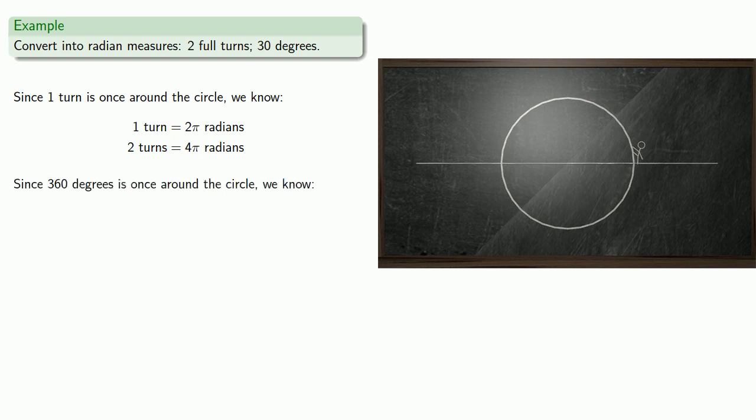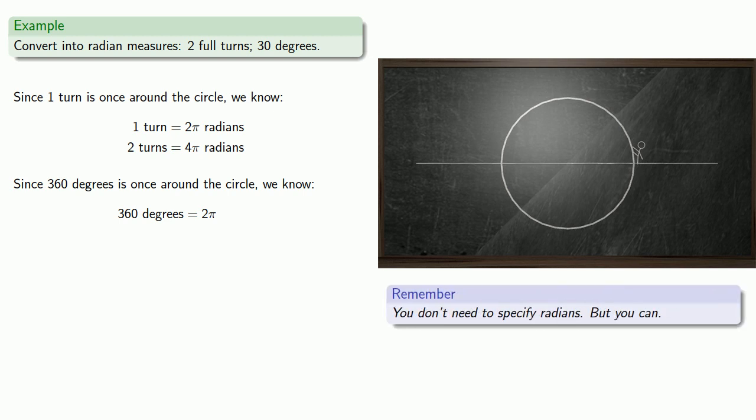Since 360 degrees is once around the circle, we know that 360 degrees must be 2π radians. And for variety's sake, we won't specify radians this time, because we don't have to. Now, if I want to get 30 degrees, let's find 1 degree. Let's divide through by 360. And so we know that 1 degree is 2π over 360 radians.